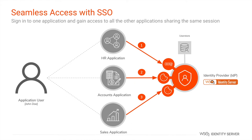When a user tries to access the first application, the application delegates the login process to the identity provider. Since there is no logged-in session for the user yet, the identity provider prompts the user for credentials to prove their digital identity. Once the user enters and submits the credentials, they are validated, a login session is created, and the user is allowed access to the application.